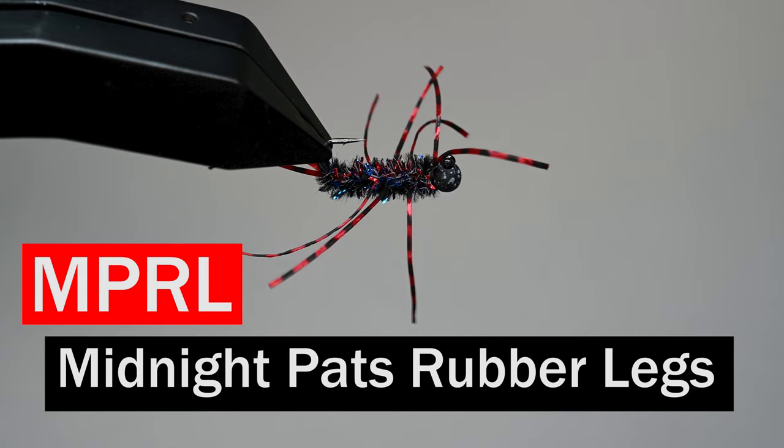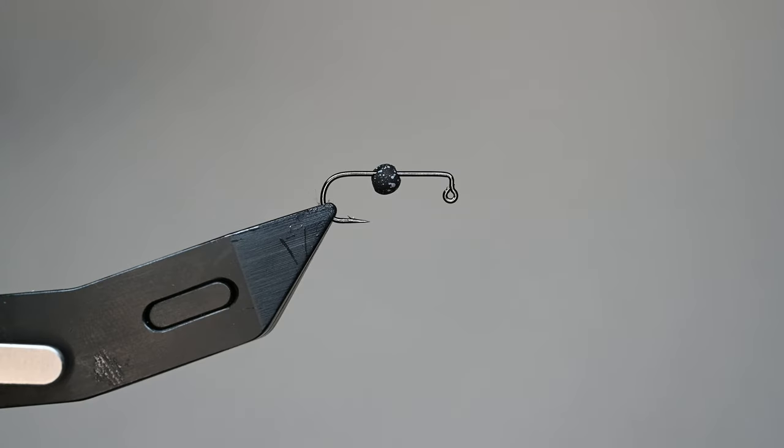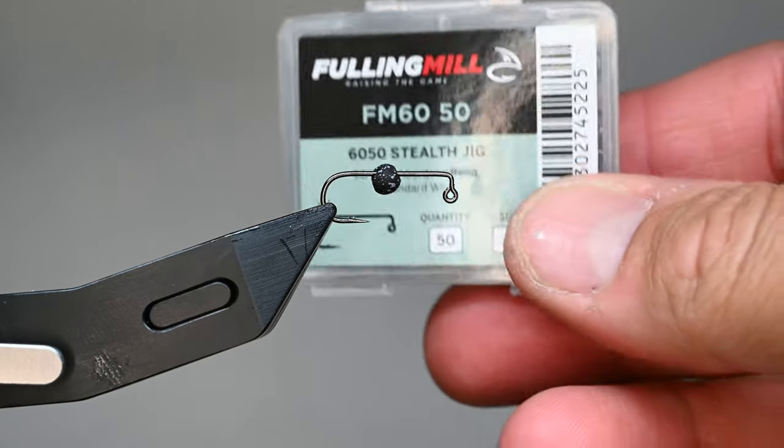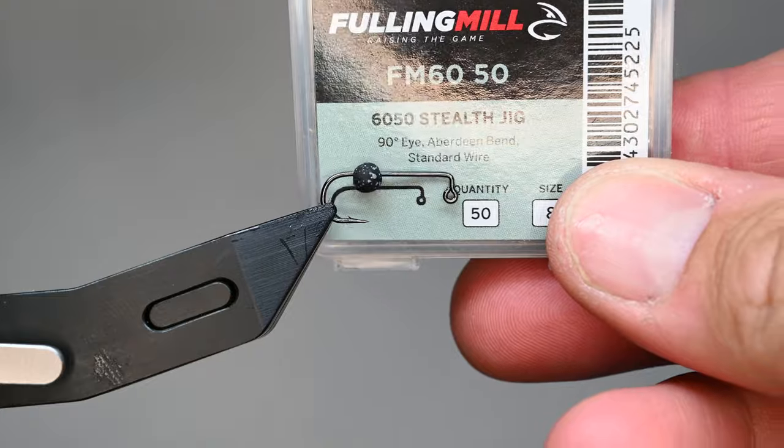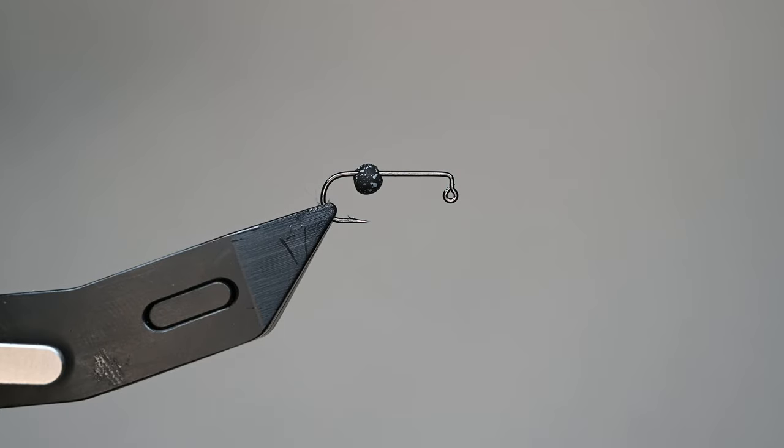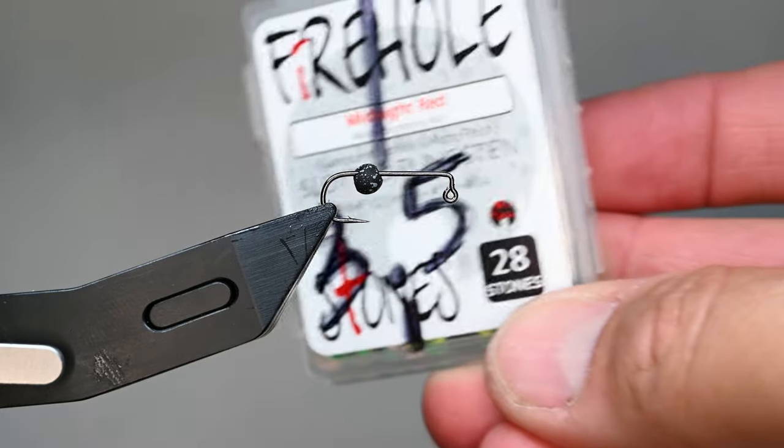What is up everybody, Sven Diesel here. We're going to be tying up the MPRL, this is a midnight version of Pat's rubber legs, a very popular stonefly nymph. We're also using a 90 degree jig hook, this is from Fulling Mill, it's the 6050 in a size 8.